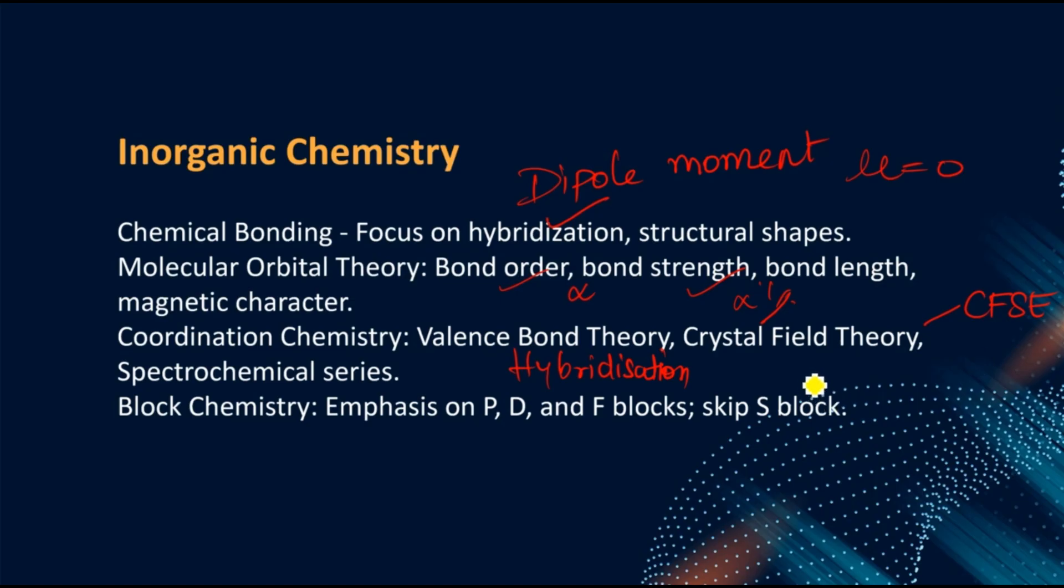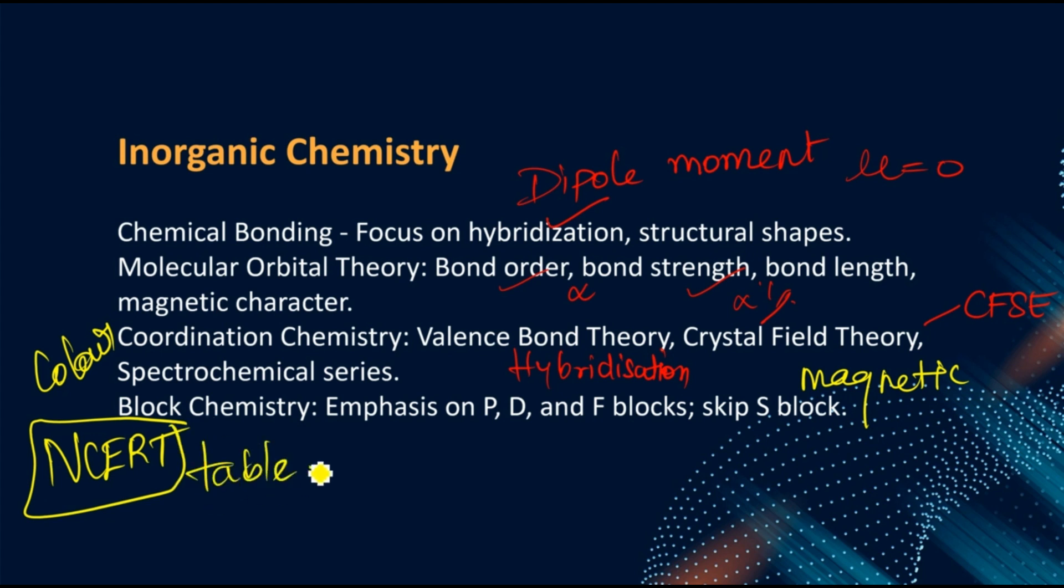In previous year question papers they are not asking much about t2g and eg, but they will definitely ask you about the magnetic moment and also color of the complex. That NCERT table, just memorize that. From color you can expect a question this year. In coordination chemistry, if you want more, just go with the nomenclature.